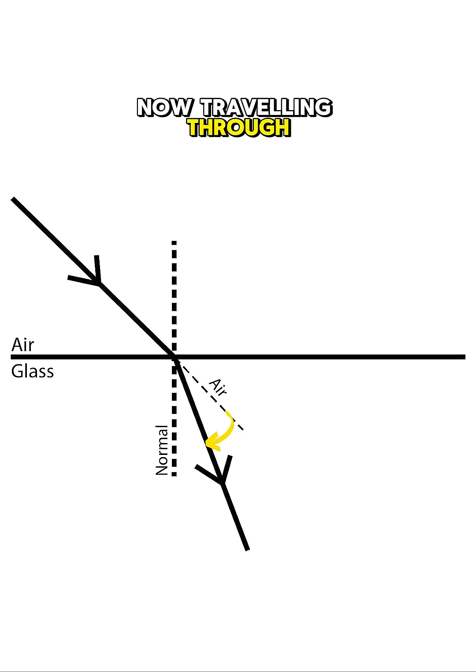Since light is now traveling through a denser medium, it will pass through the area which is closer to the normal.